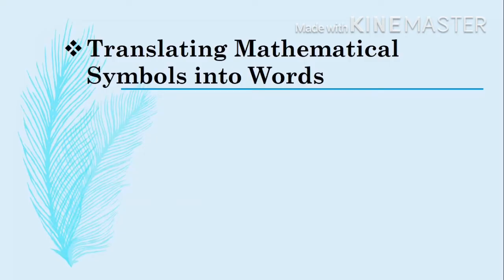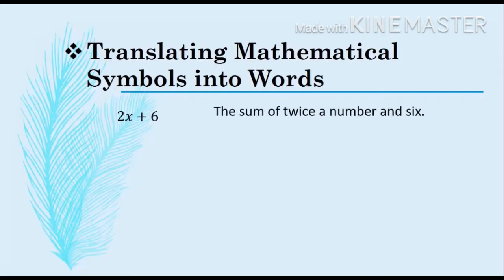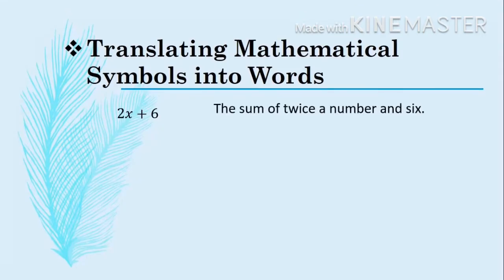Let's now try translating mathematical symbols into words or sentences. Take note that we have different terms that we can use, and there can be multiple correct answers for one expression. In the first example, we have 2x plus 6. The operation is addition — we can use terms like sum, added to, total, and so on. We also have 2x wherein the operation is multiplication. This could be translated as 'the sum of twice a number and 6,' or '2 times a number plus 6.'